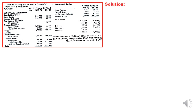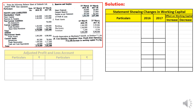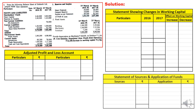Now let's start the solution. We require to prepare the statement showing changes in working capital, then the adjusted P&L account, and the statement of sources and application. Bear in mind there are adjustments on machinery as well as furniture. First item: share capital was ₹2,40,000 last year and is now ₹3,60,000. The incremental change of ₹1,20,000 is called issue of shares, recorded as a source.